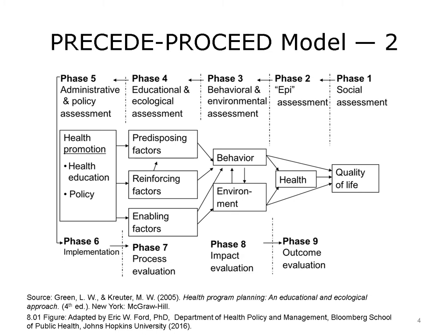If the answer to the Phase 5 assessment is yes, we've completed the PRECEDE component of the model and can move to the lower half of the chart and work our way back in the other direction — that would be the PROCEED component. In Phase 6, we'll have developed a program and will be implementing it. Often those programs are designed to modify or change the enabling, reinforcing, and predisposing factors in the environment.